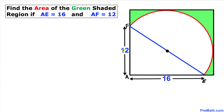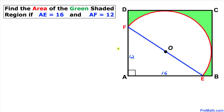Welcome to PreMath. In this video tutorial we have a semicircle inscribed in a given rectangle. The line segment AE is 16, the line segment AF is 12, and we are going to calculate the area of the green shaded region.